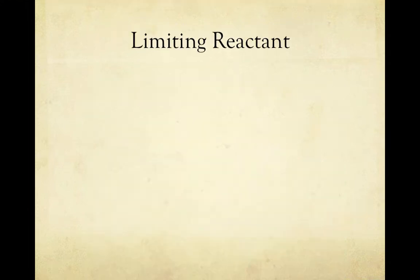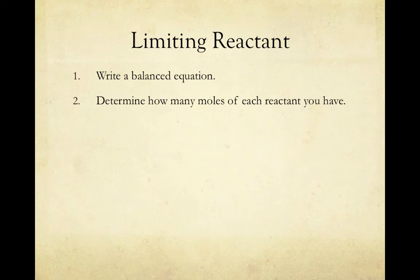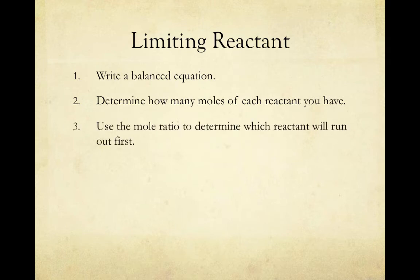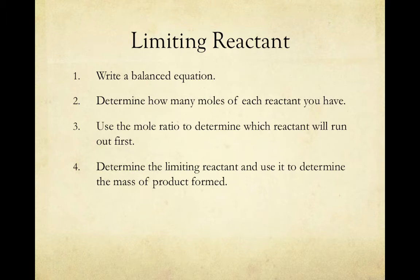When performing calculations involving a limiting reactant, there are several steps we need to follow. First, and always in stoichiometry, we need to write a balanced equation for the process we're looking at. Then we need to determine how many moles of each reactant we have — since you're usually given masses of reactants, this will involve dividing by the molar mass to convert to moles. Then you'll use the mole ratio to determine which reactant will run out first, and therefore which reactant is limiting. From there, you proceed like a normal stoichiometry calculation using the limiting reactant to determine the moles and then the mass of product formed.